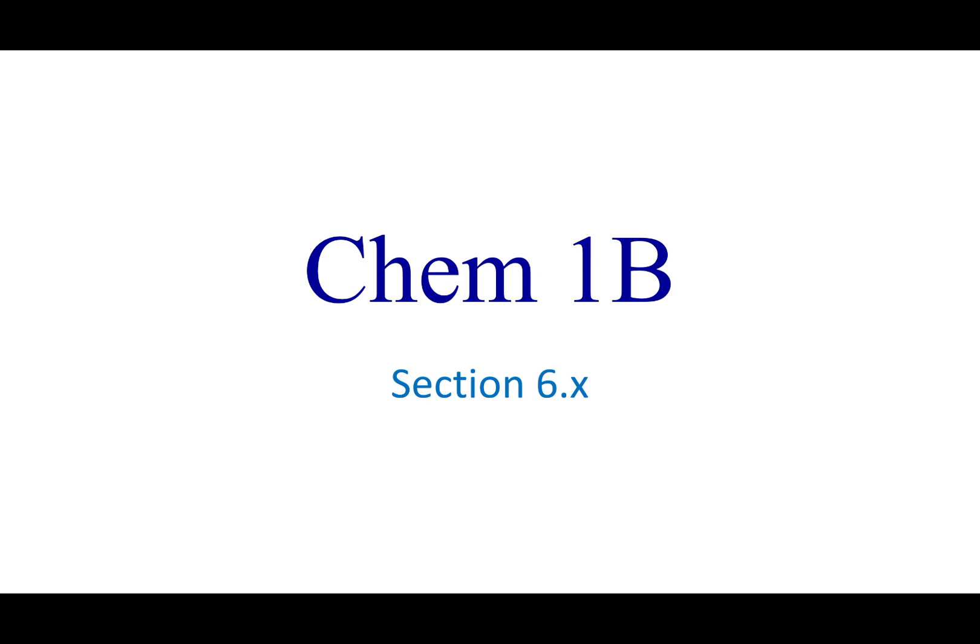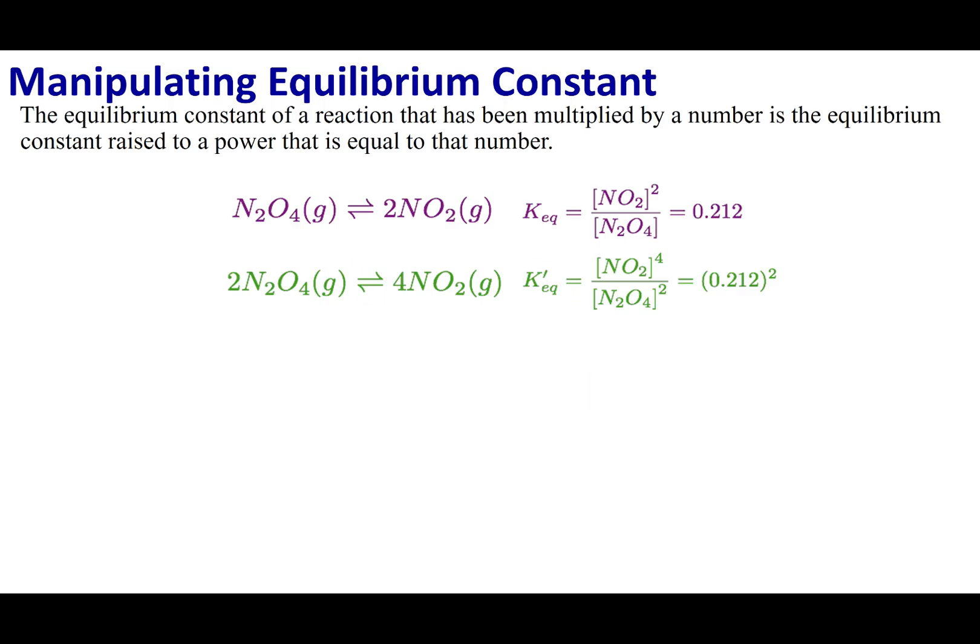Welcome to section six point, what I'm calling x. There are a few odds and ends and concepts that your book sprinkles all over the place. I just wanted one section or one lecture where I go over these topics to make sure you guys can get through the book problems and understand some of the nuances associated with the equilibrium constant. The first thing I want to talk about is how we can manipulate the chemical equation and see what effects it has on the equilibrium constant.